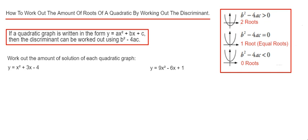If it comes out equal to 0, it has one root, so it's just touching the x axis in one place. And if it comes out less than 0, then there's no roots, so the quadratic graph is above the x axis.